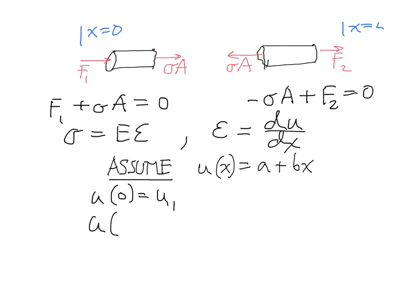So if I write those two equations out, u of 0 equals u1, u of l equals u2. And then plug them into the expression for u of x equals a plus bx. I find that u1 is just going to be equal to a. And u2 is going to be equal to a plus bl.